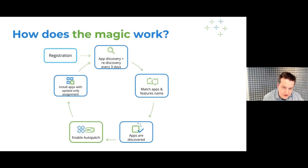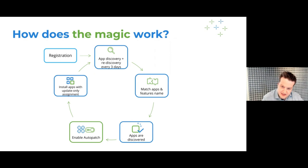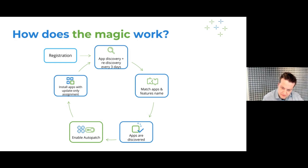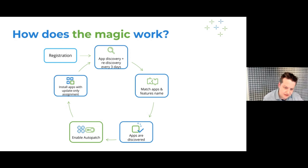Just to give you a bit of background on how it actually works: as soon as you register as part of SCAPMAN, we will straight away start discovering which applications you have running in your environment. Once we have those apps discovered, we're going to match the name that those apps have in Apps and Features with the name we currently have configured in SCAPMAN. For most of our applications, we are tracking the name they have in Apps and Features. We will match up those names, and once they match up, we'll give you an overview of which applications we've discovered and whether they're managed or not.